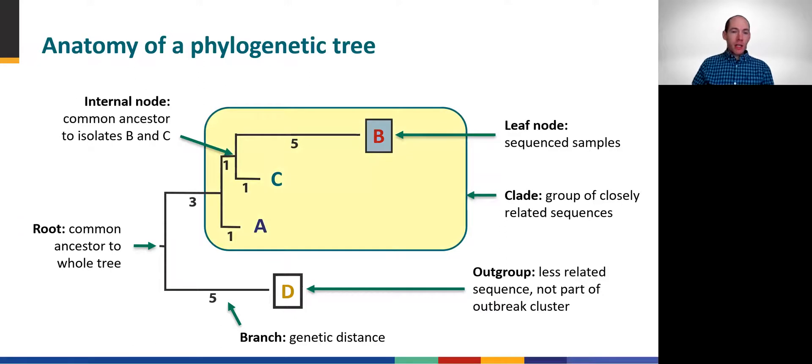Lastly, we use the term clade to loosely define any group of closely related sequences. Importantly, there are no strict cutoffs for defining clades, but members of a clade should all share an internal ancestral node. In our simple example here, the box highlights a clade containing isolates A, B, and C, but we could just as easily describe isolates B and C as forming a clade. However, although the distance between isolates A and C is shorter, only three SNPs, they do not constitute a clade because they do not share an internal node not also shared by isolate B.